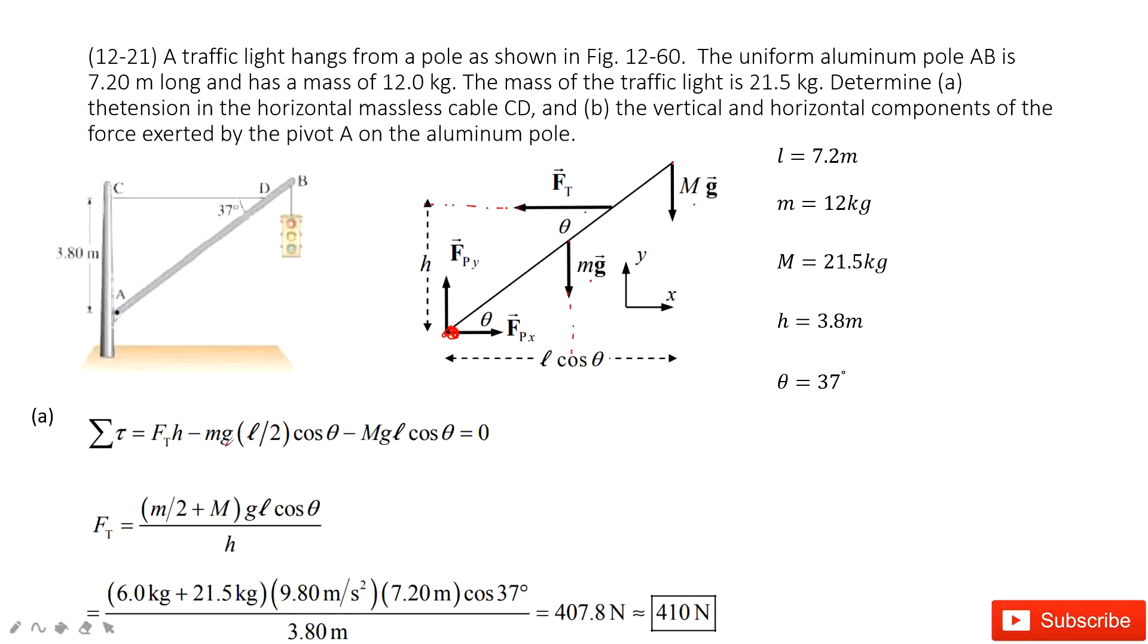Then we can write this equation. Let the net torque equal to zero. And then you can use the right hand rule to determine its direction. This one is positive, this one is negative, negative. And then you solve this equation, get a function for FT. Input all the quantities, you get the final answer there.